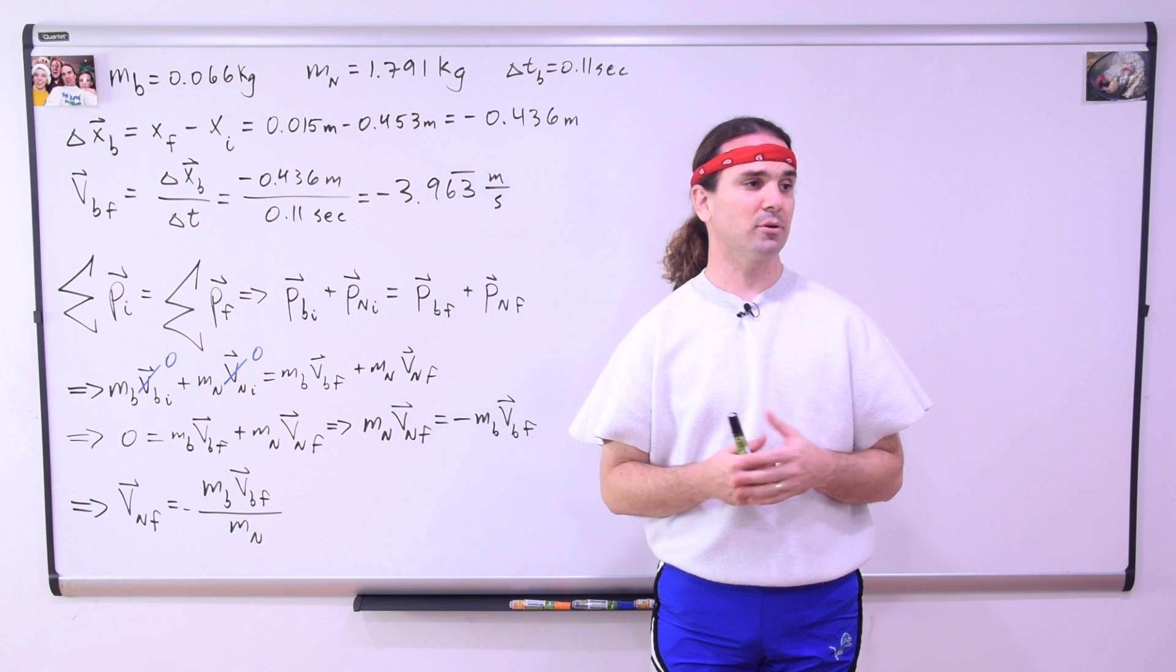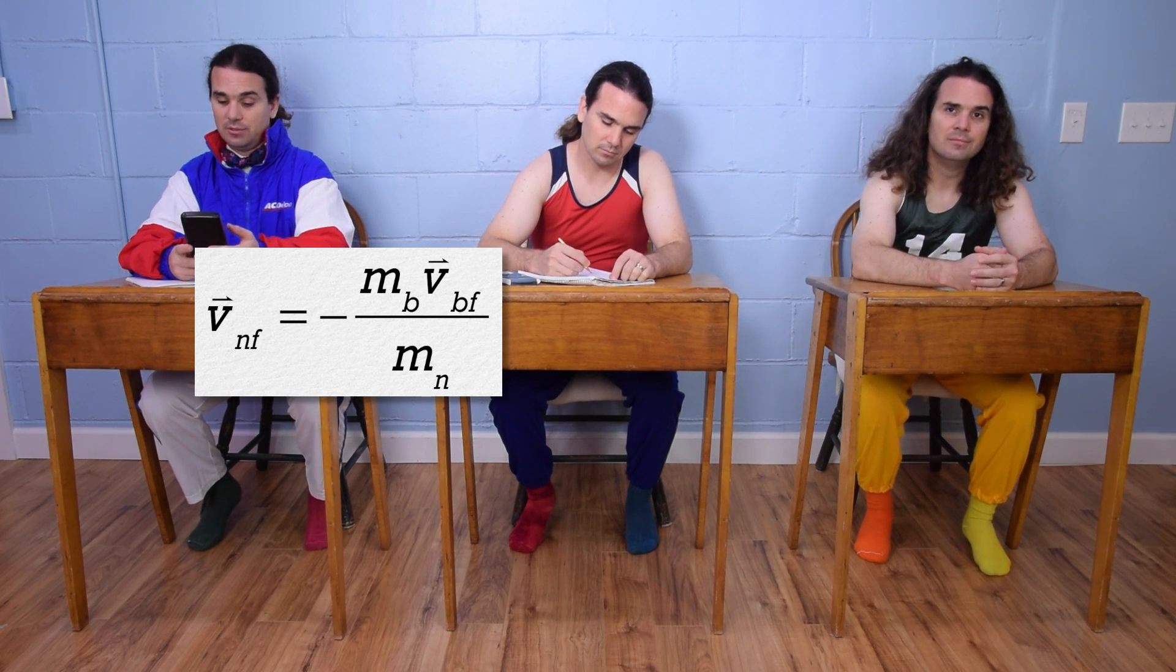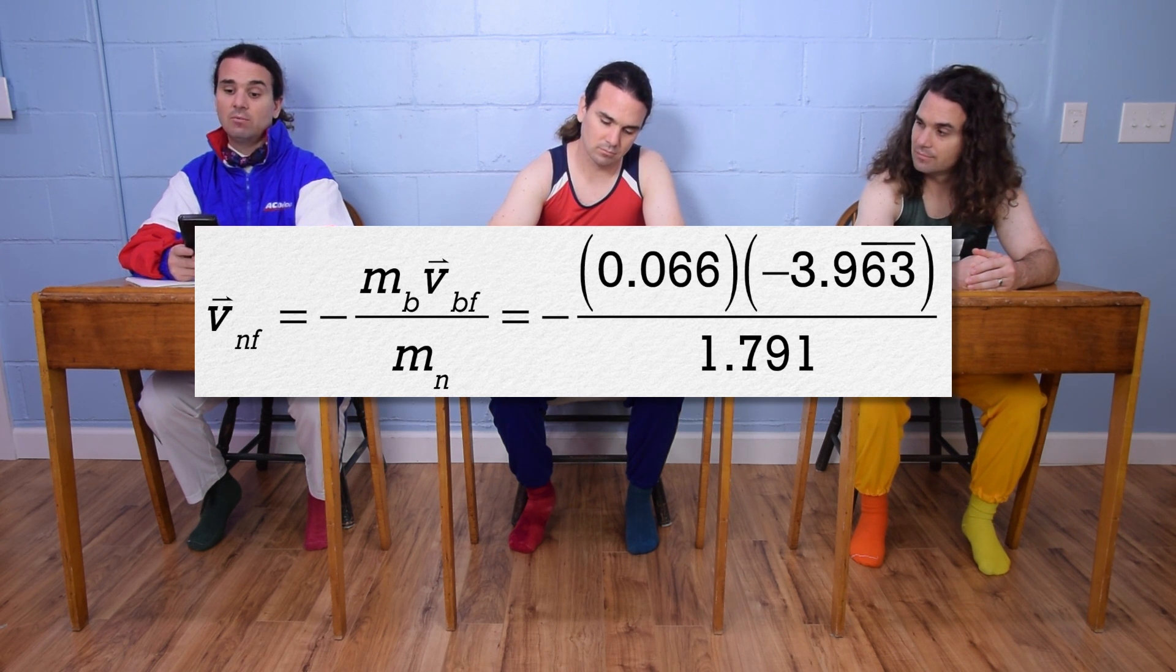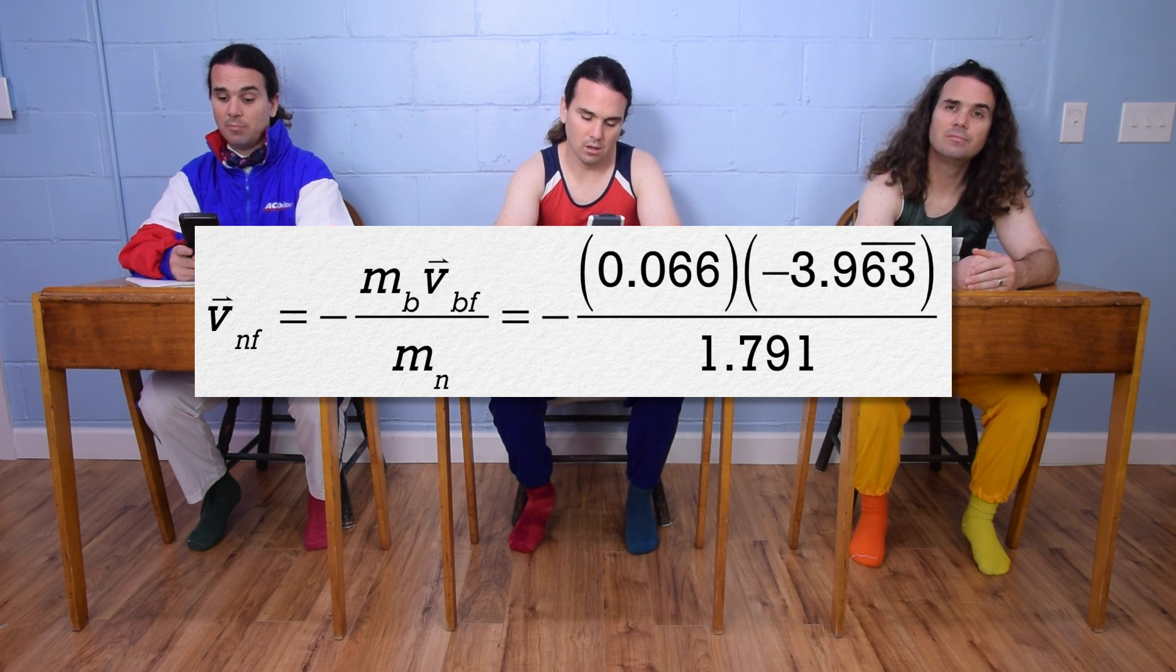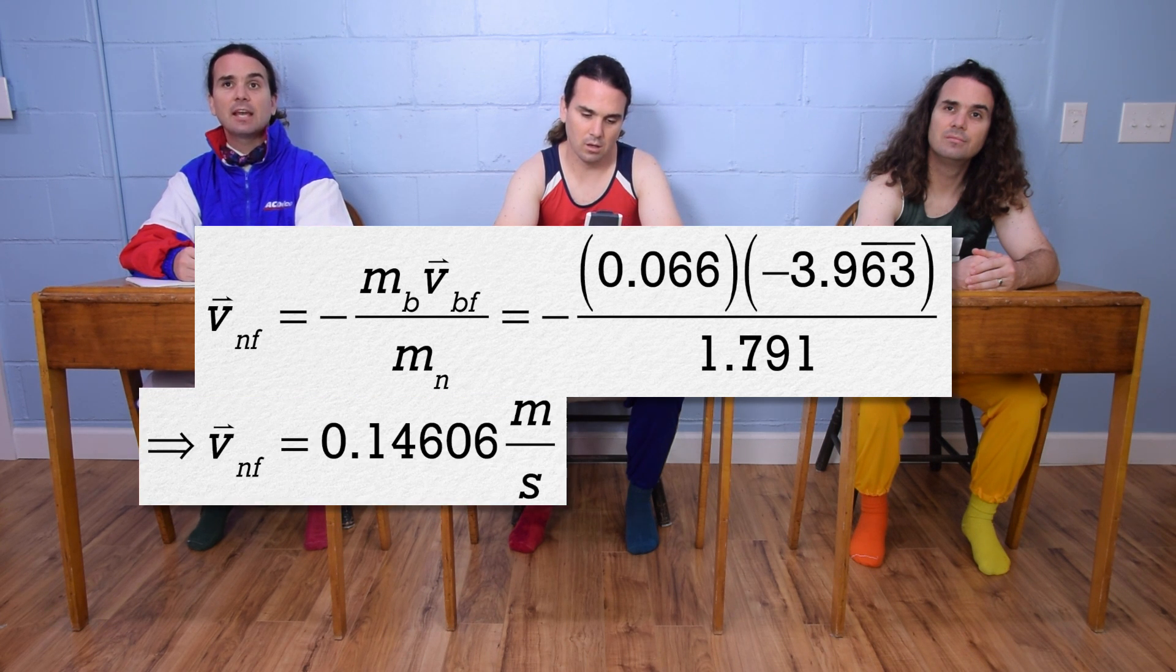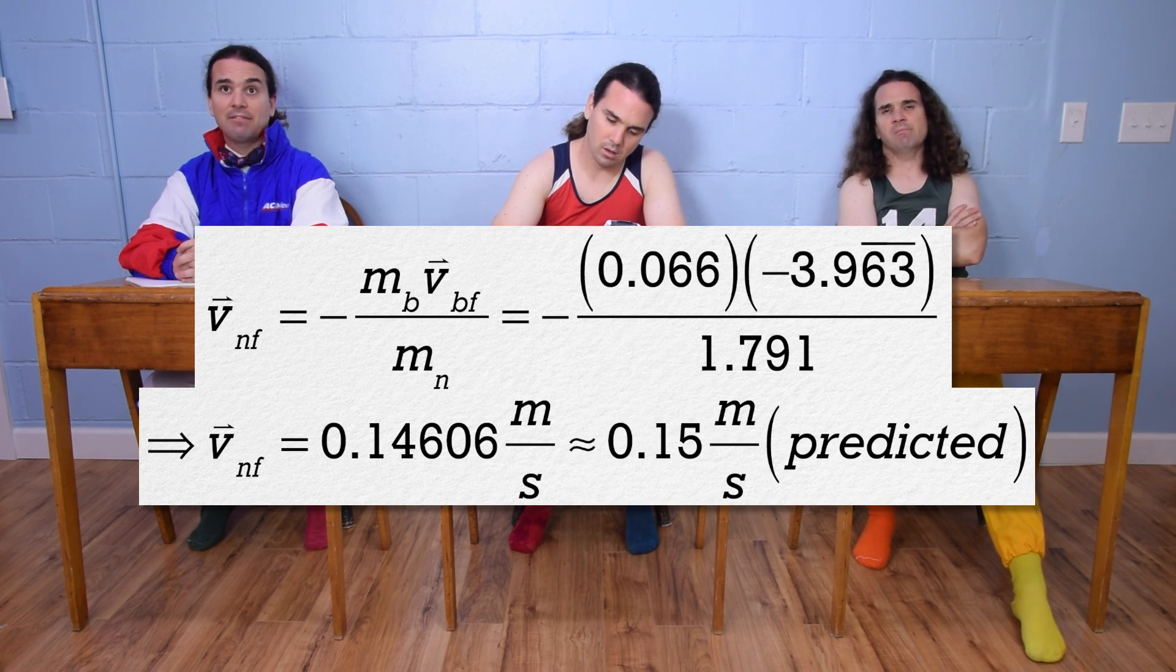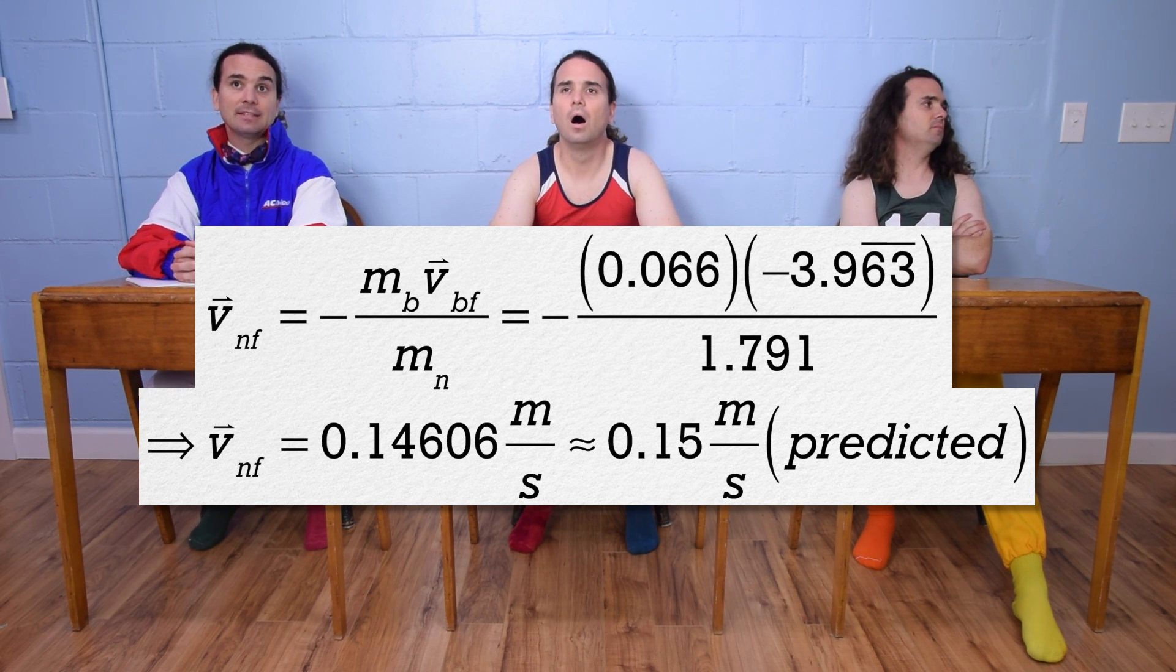Billy, could you please plug in some numbers? Sure. The velocity of the nerdapult final equals the negative of 0.066 times negative 3.963, with a 6-3 repeating, divided by 1.791, which is 0.14606 meters per second. And we are predicting that the nerdapult should have a final velocity of roughly 0.15 meters per second to the right.